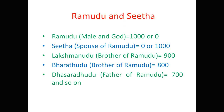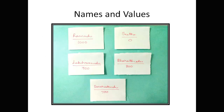First, we need to take a paper like this, cut it into small portions, and write the name and also the value on each piece. For Ramudu the value is 1000, for Sita the value is 0, Lakshmanudu the value is 900, Bharatudu the value is 800, and Dasaradudu the value is 700.